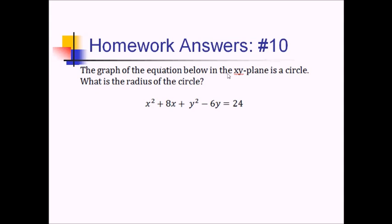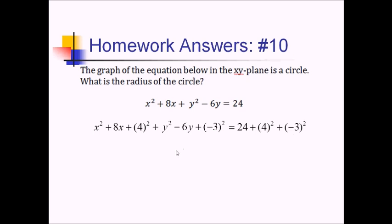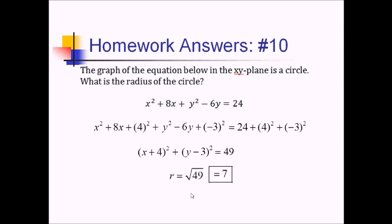For number 10, the graph of the equation in the xy-plane is a circle and we want the radius. Completing the square: for x, half of 8 is 4, so add 4² = 16 to both sides; for y, half of −6 is −3, so add (−3)² = 9 to both sides. That gives (x + 4)² + (y − 3)² = 24 + 16 + 9 = 49. So r² = 49, meaning the radius is √49 = 7. Thank you.